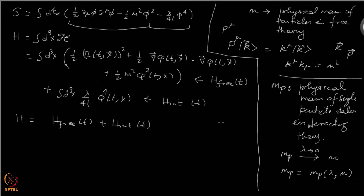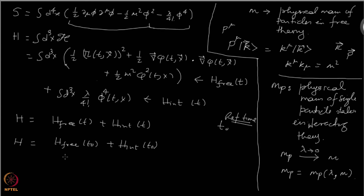What I do is choose some reference time t_naught — it is arbitrary. I write the Hamiltonian as H_free(t_naught) plus H_interaction(t_naught). I can put any time in here because the sum is always a constant. I write H_free(t_naught) as H_naught for short notation. So H = H_naught plus H_interaction(t_naught). By definition, both parts are constants since they are evaluated at a fixed time t_naught.